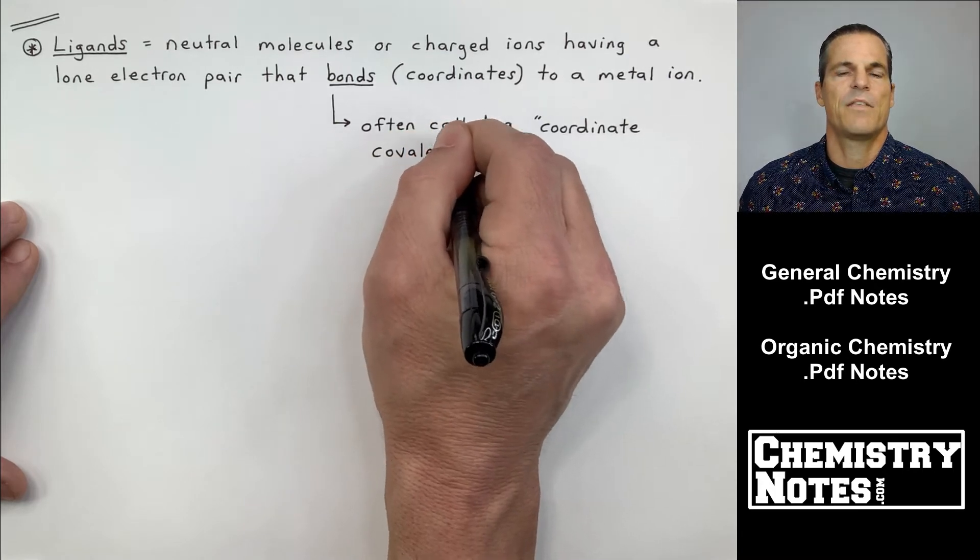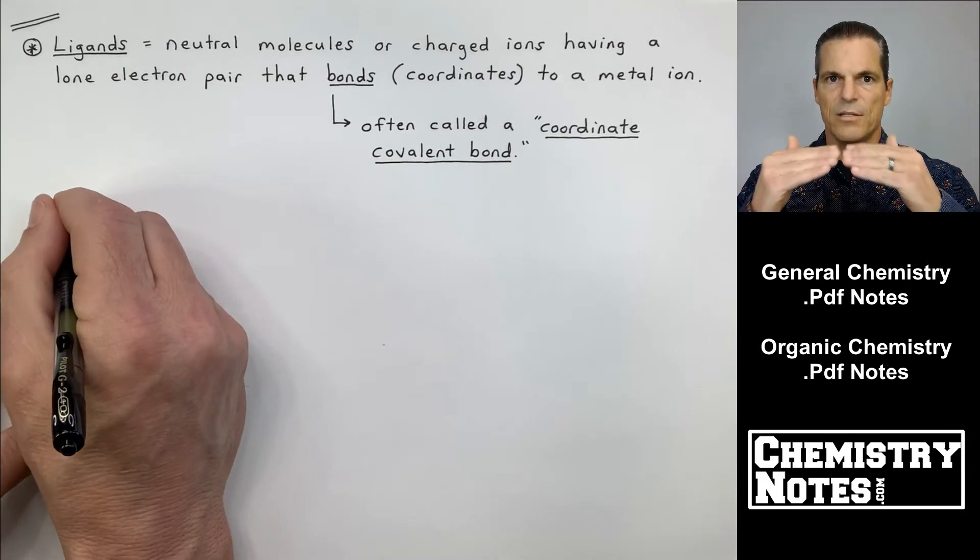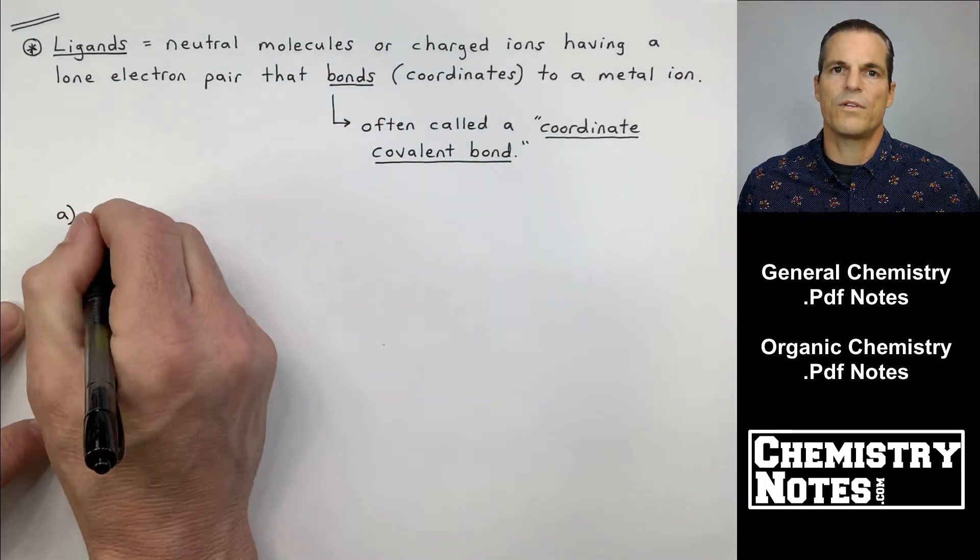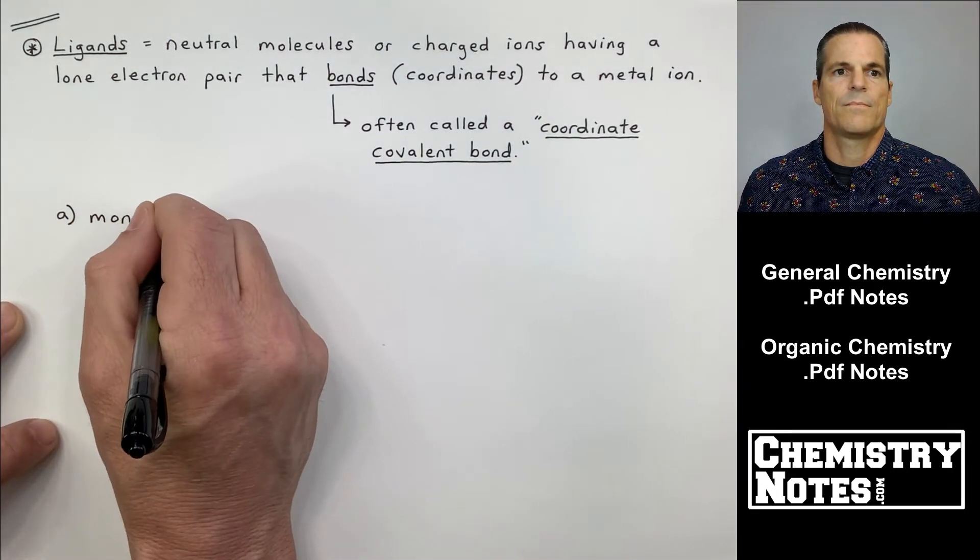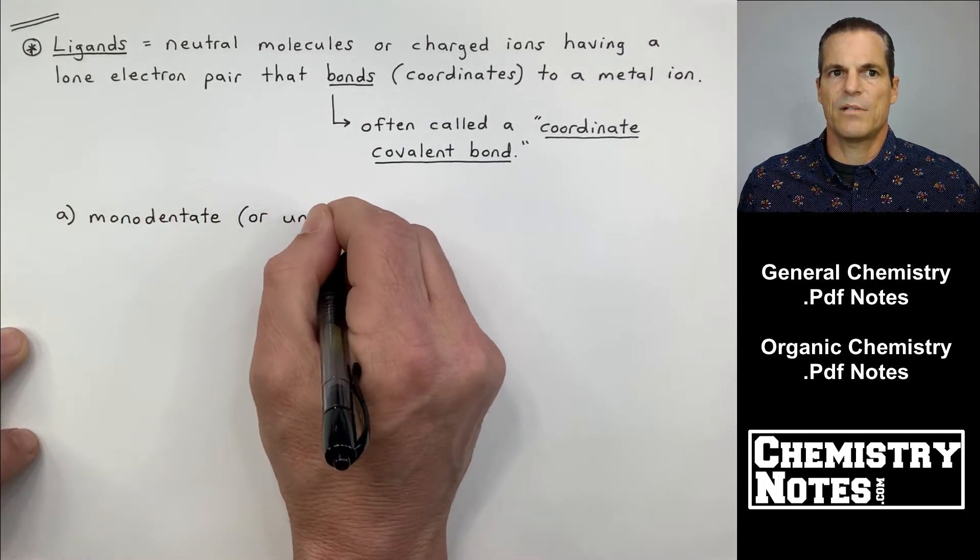Ligands, neutral molecules or charged ions having a lone electron pair that bonds or coordinates to a metal ion. Now, this bond, this metal ion ligand connection is often called a coordinate covalent bond.